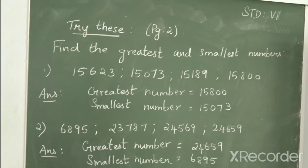Next one: 6,895, 23,787, 24,569 and 24,659. Here a 4-digit number and 5-digit numbers are given. So the greatest number among the 4 is 24,659 and the smallest number will be 6,895, that is the number having fewer digits.